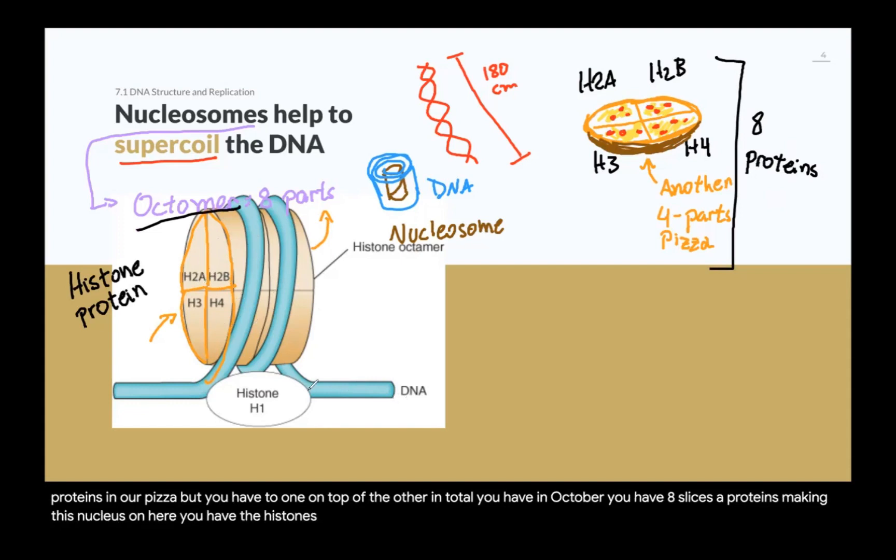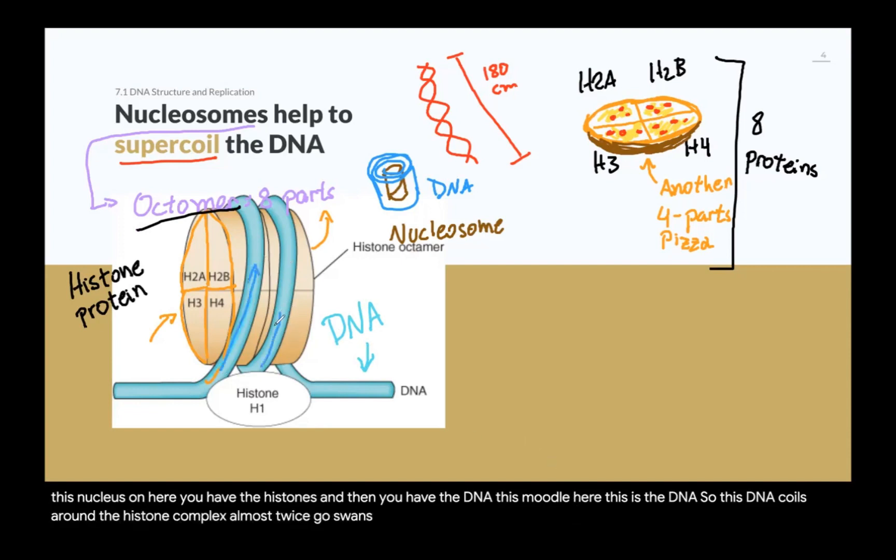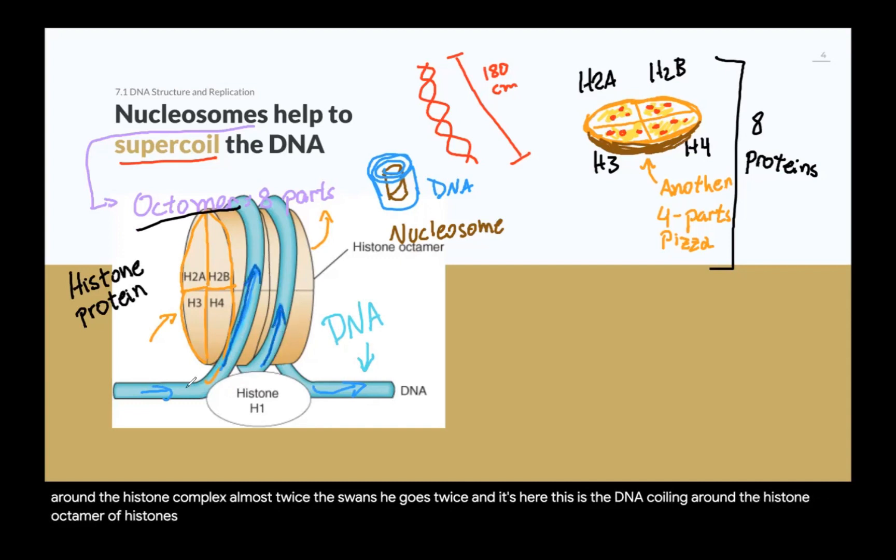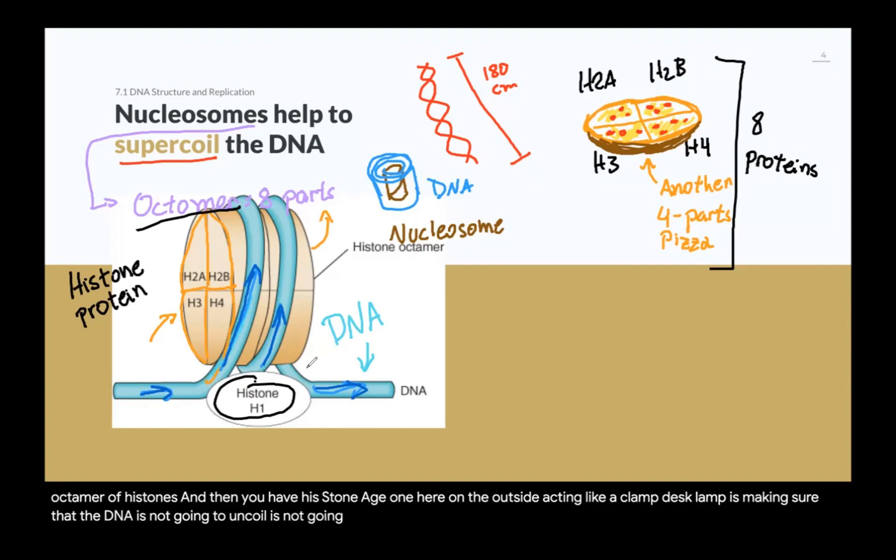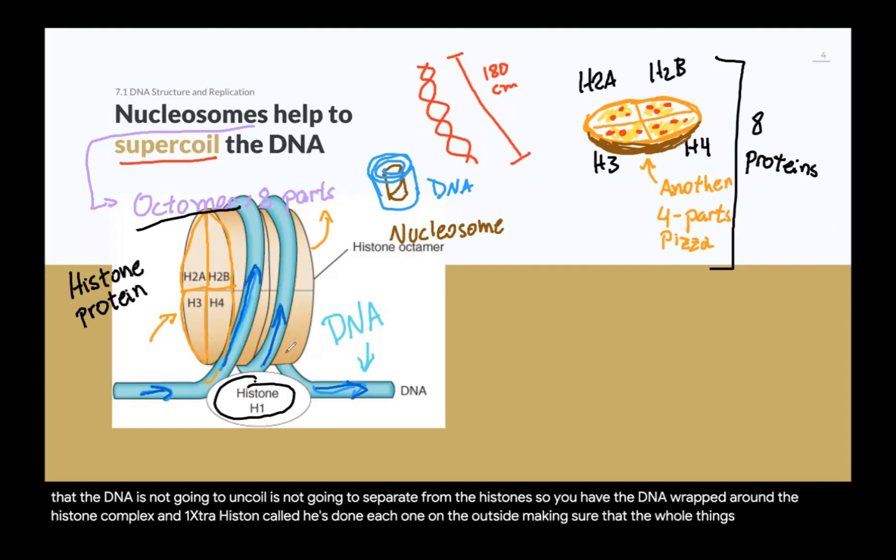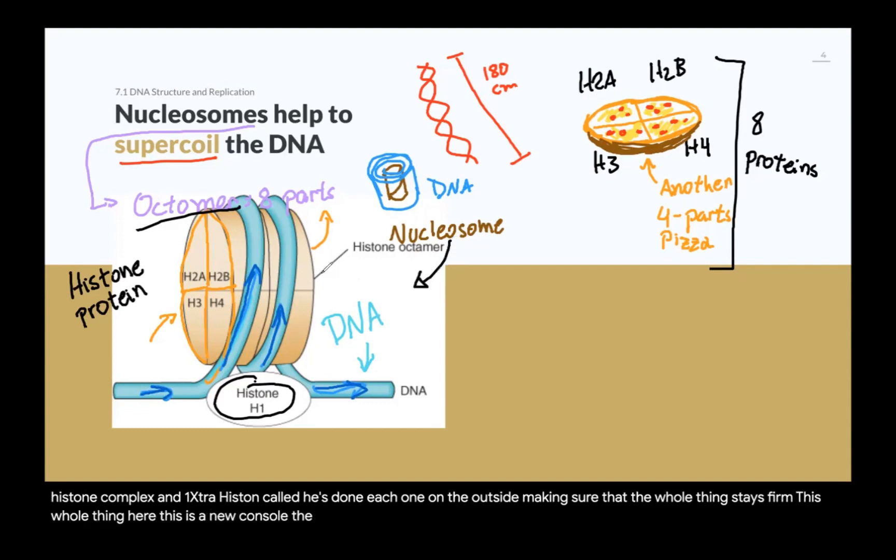You have the histones, and then you have the DNA, this noodle here. This is the DNA. So this DNA coils around the histone complex almost twice. It goes once, it goes twice, and it's here. This is the DNA coiling around the histone, the octomer of histones. And then you have histone H1 here on the outside, acting kind of like a clamp. This clamp is making sure that the DNA is not going to uncoil, is not going to separate from the histones. So you have the DNA wrapped around the histone complex, and one extra histone called histone H1 on the outside, making sure that the whole thing stays firm. This whole thing here, this is a nucleosome.